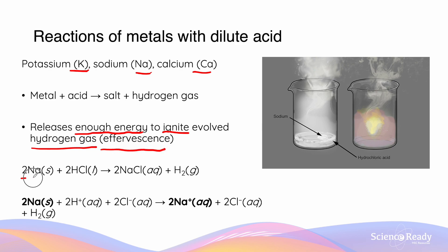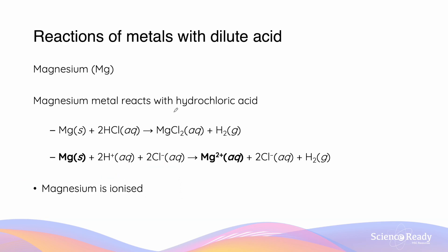Sodium, when reacted with dilute hydrochloric acid, will produce sodium chloride in aqueous state as well as hydrogen gas. In the complete ionic equation, the sodium which was originally neutral has now become ionised to sodium⁺. Magnesium, when reacted with hydrochloric acid, also forms a salt and hydrogen gas. However, the reaction does not lead to ignition of the gases because it does not release as much energy. The magnesium is ionised and turns into Mg²⁺.